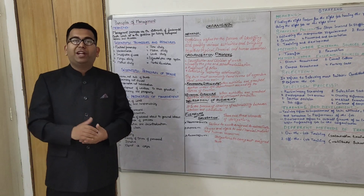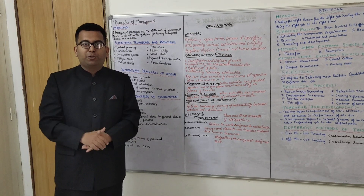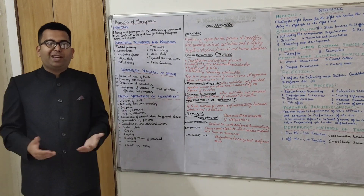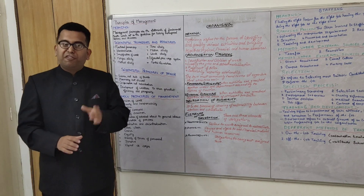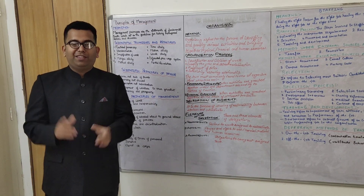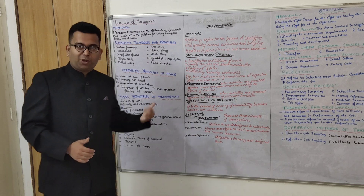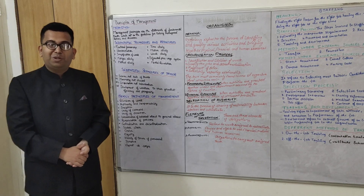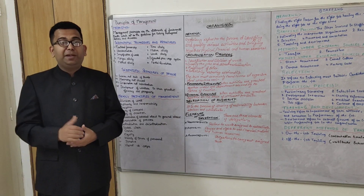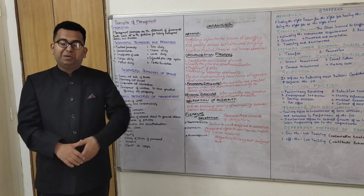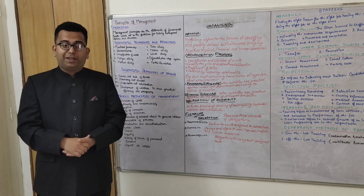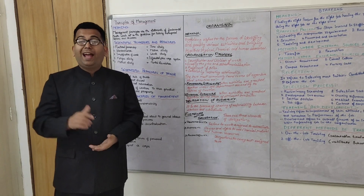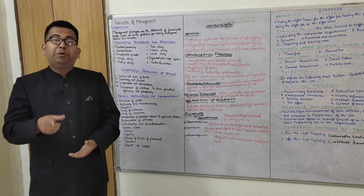Fayol says excess of everything is bad and there should be a balance between authority and responsibility. Third is discipline: discipline means the do's and don'ts which every employer has to follow, irrespective of levels of management — top, middle, or lower. Everybody has to be disciplined, and if you violate that, you would be penalized. Fourth is unity of command: one senior gives command to one subordinate. If a junior is getting instructions from several bosses, there will be confusion and chaos — so one boss gives order to only one junior.